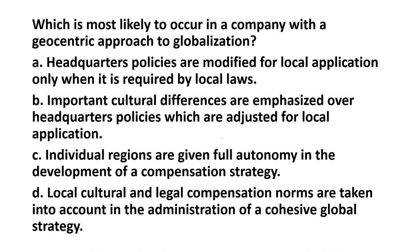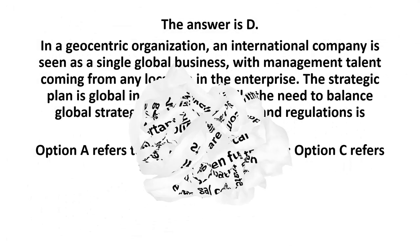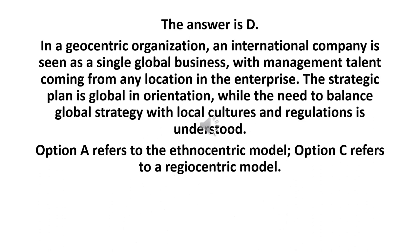Which is most likely to occur in a company with a geocentric approach to globalization? A. Headquarters policies are modified for local application only when required by local laws. B. Important cultural differences are emphasized over headquarters policies, which are adjusted for local application. C. Individual regions are given full autonomy in the development of a compensation strategy. D. Local cultural and legal compensation norms are taken into account in the administration of a cohesive global strategy. The answer is D. In a geocentric organization, an international company is seen as a single global business, with management talent coming from any location in the enterprise. The strategic plan is global in orientation, while the need to balance global strategy with local cultures and regulations is understood. Option A refers to the ethnocentric model; Option C refers to a regiocentric model.